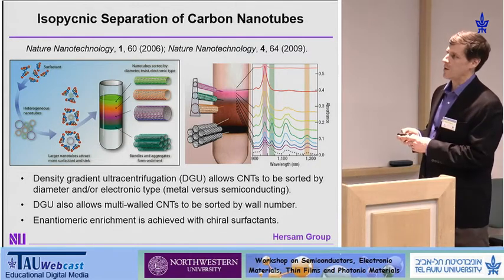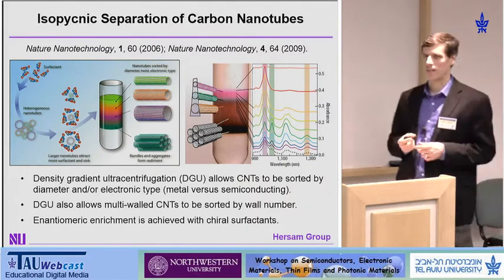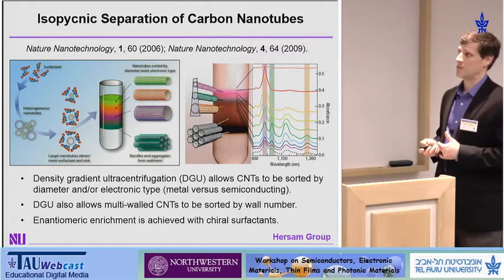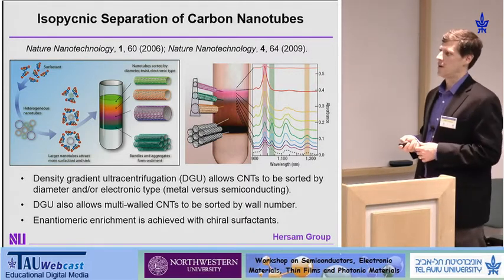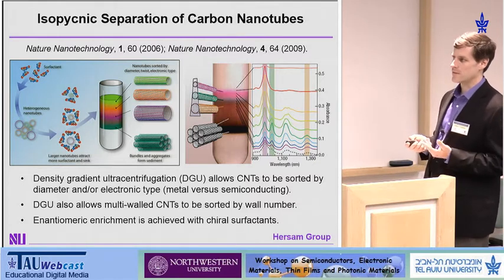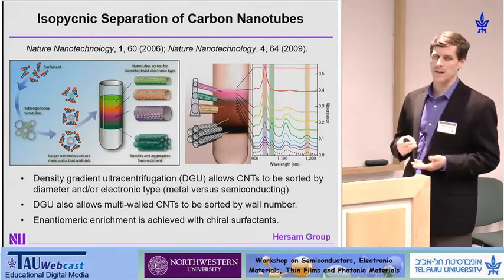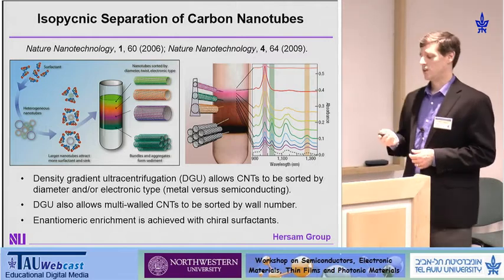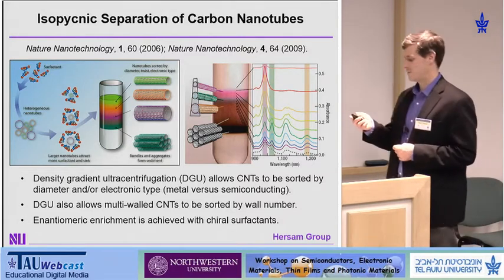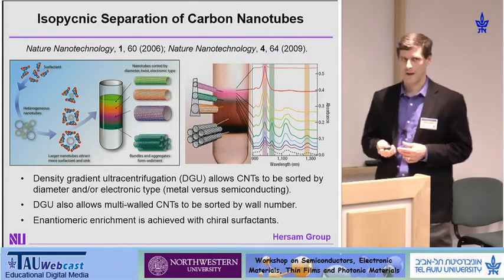In our early work, we were able to separate carbon nanotubes by their diameter using this method. However, diameter separation is not sufficient — you need to also separate by the chiral angle. The surfactants also contribute to the buoyant density of the nanomaterial, and with appropriate choice of surfactant, you can separate by diameter or electronic type — metal versus semiconducting. You can separate multi-wall nanotubes by the number of walls, and even achieve enantiomeric separation using chiral surfactants, separating right-handed from left-handed carbon nanotubes. Over the past decade, we've been able to isolate essentially any and all nanotube chiralities via this method.